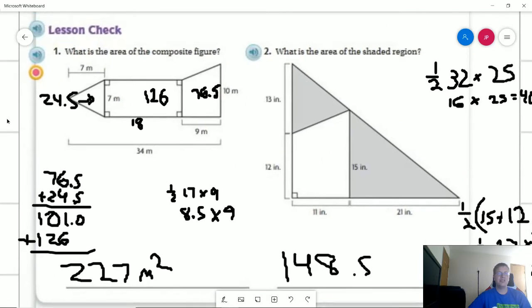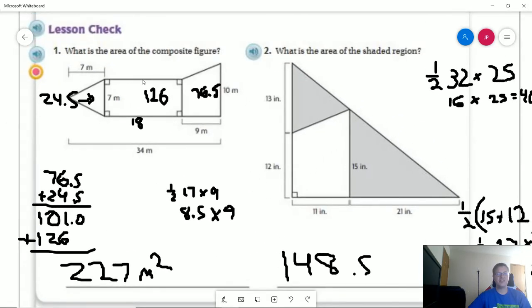So number one on the back. What is the area of the composite figure? So I started by doing the rectangle, but to do the rectangle I have to add up 7 plus 9. That gives us 16, and then do 34 minus 16 to get this length. And that is going to be 18. And then I can go ahead and do 18 times 7 to get 126.